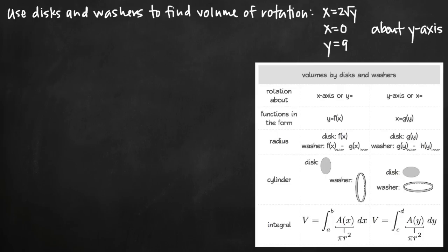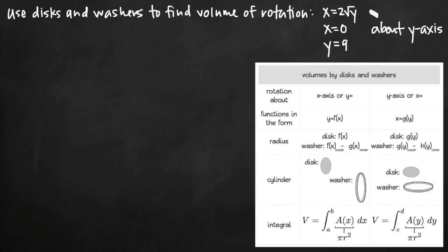Today we're going to be talking about how to use the disk and washer method to find the volume generated by rotating the region bounded by these curves about the y-axis. In this particular problem we have the curves x equals 2 times square root of y, x equals 0, and y equals 9. These three curves bound a particular region and we're going to rotate it around the y-axis to create a solid figure, and we need to find the volume of that solid.